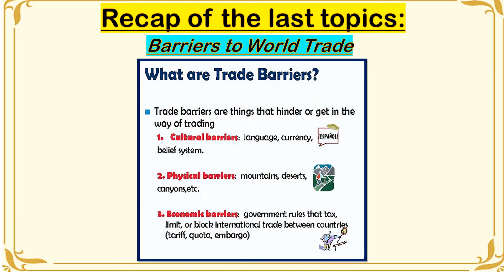So what are trade barriers? Trade barriers are things that hinder or get in the way of trading. There are three types of trade barriers. Number one is cultural barriers, which include language, currency, and belief system. Number two, we have fiscal barriers that include mountains, deserts, and canyons. We also have economic barriers that include government rules that tax, limit, or block international trade between countries — which we have studied: tariff, quota, and embargo.